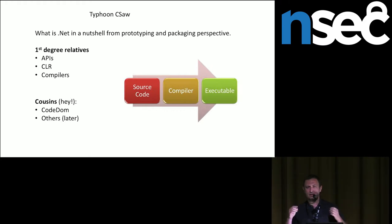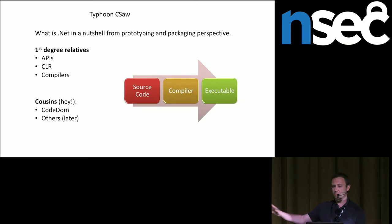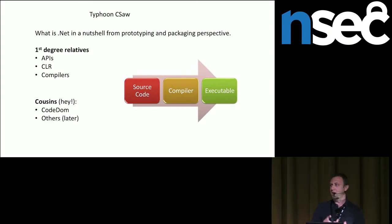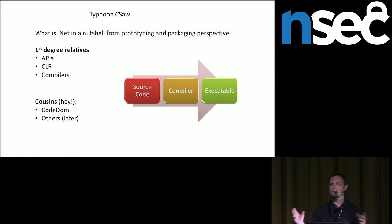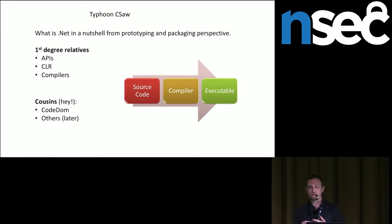When we start thinking about this compilation and running cycle that you rinse and repeat, you have source code, a compiler, an executable, and then you go with it. From the offensive perspective, what is .NET in a nutshell? You've got the APIs, you've got the Common Language Runtime which is the framework of .NET, and you've got compilers inherent to the Windows installation. But you also have some distant relatives — the Code Object Model and some other things we're going to talk about.